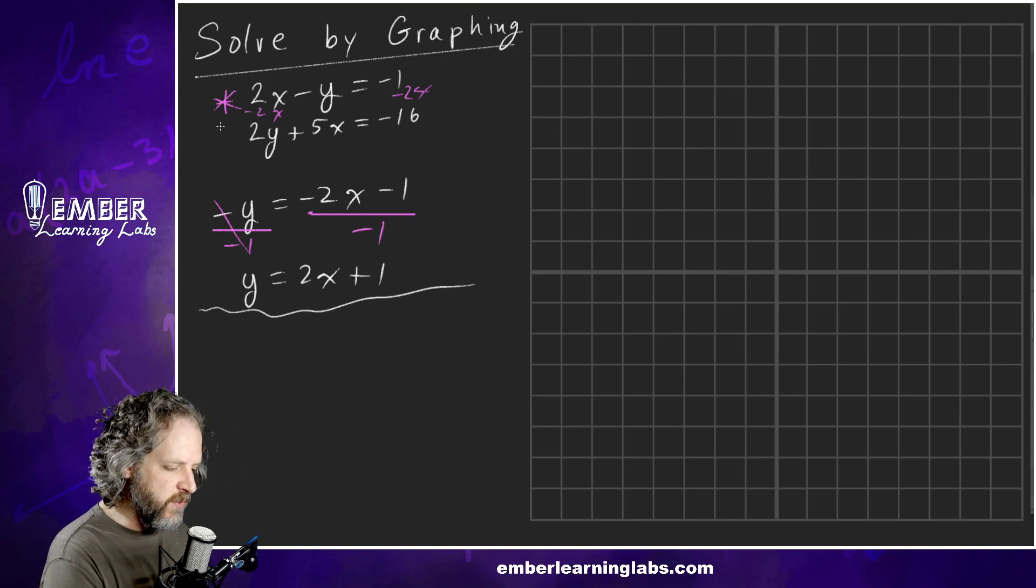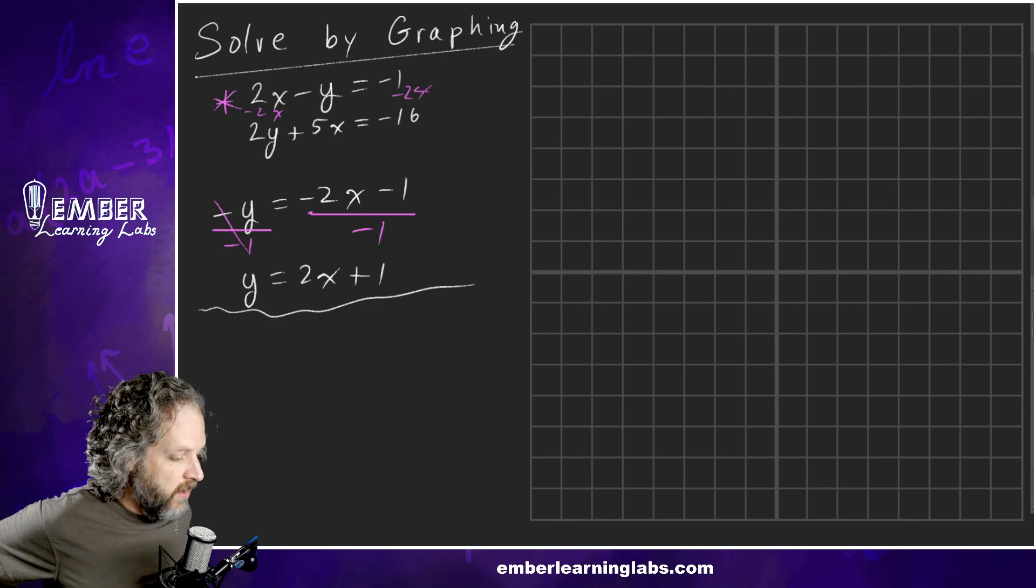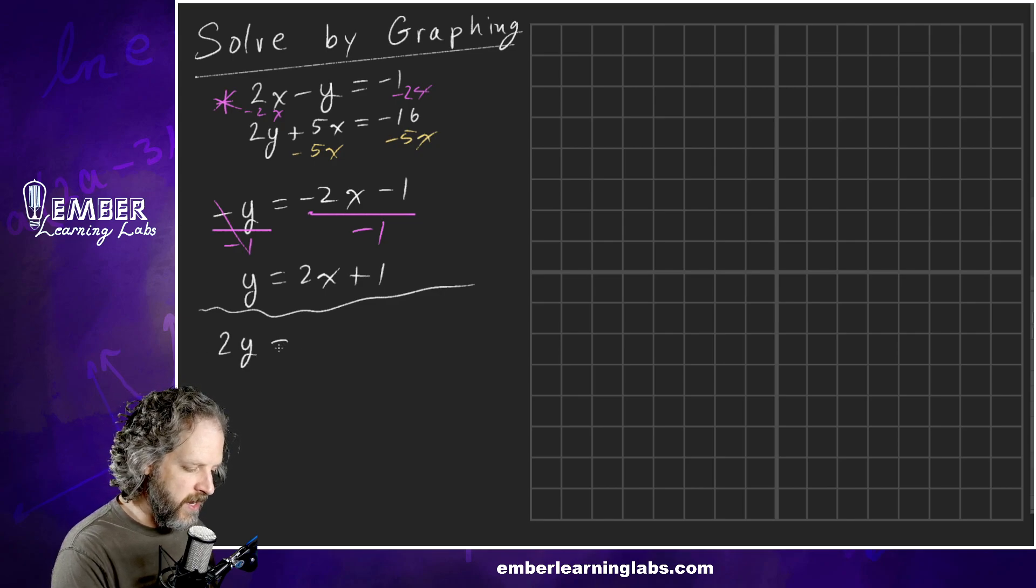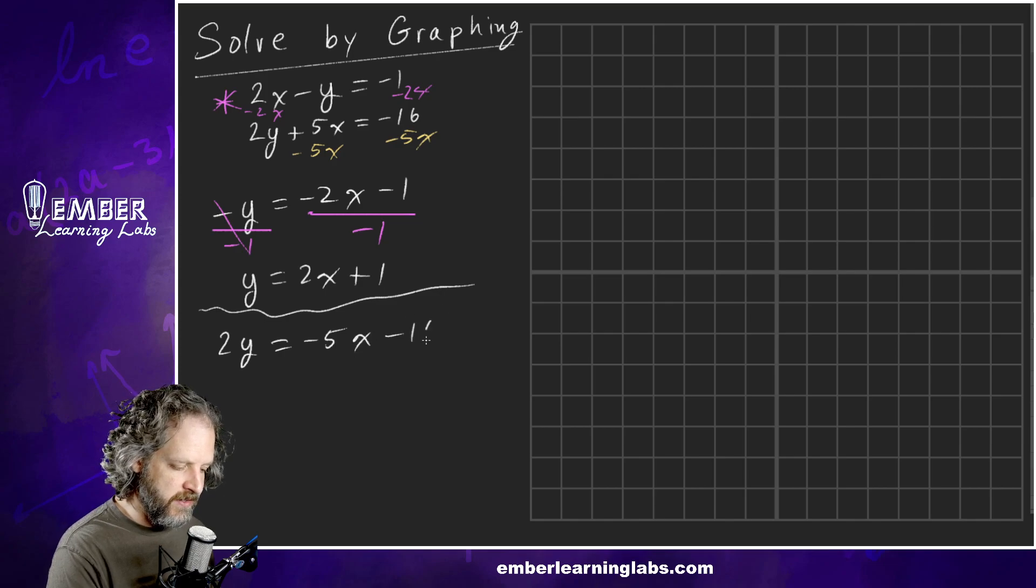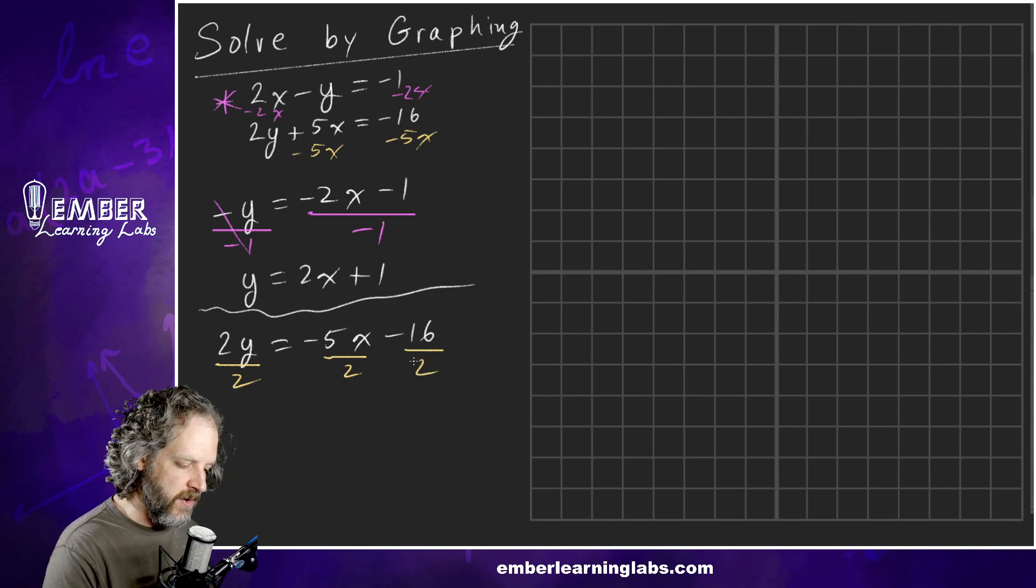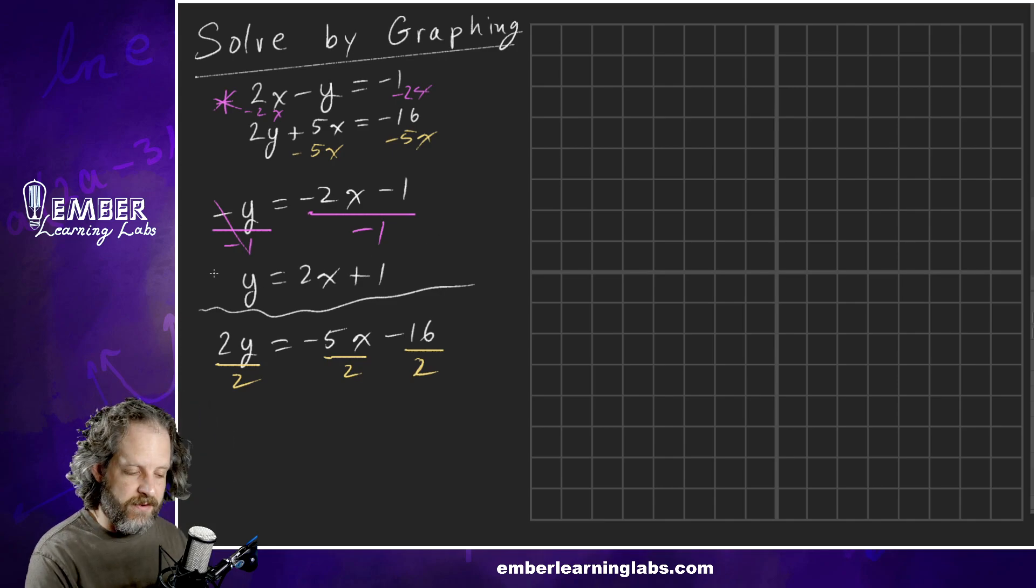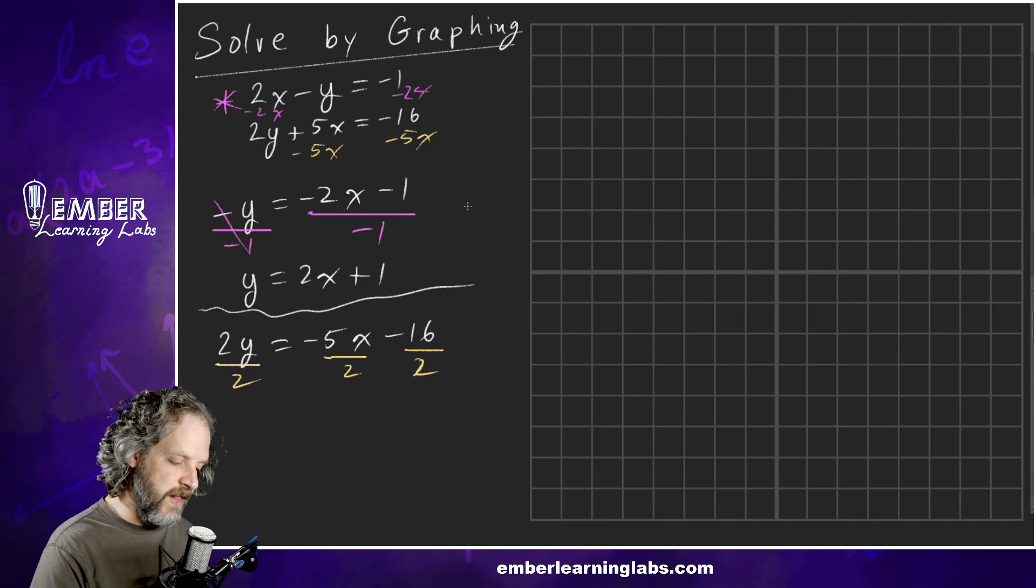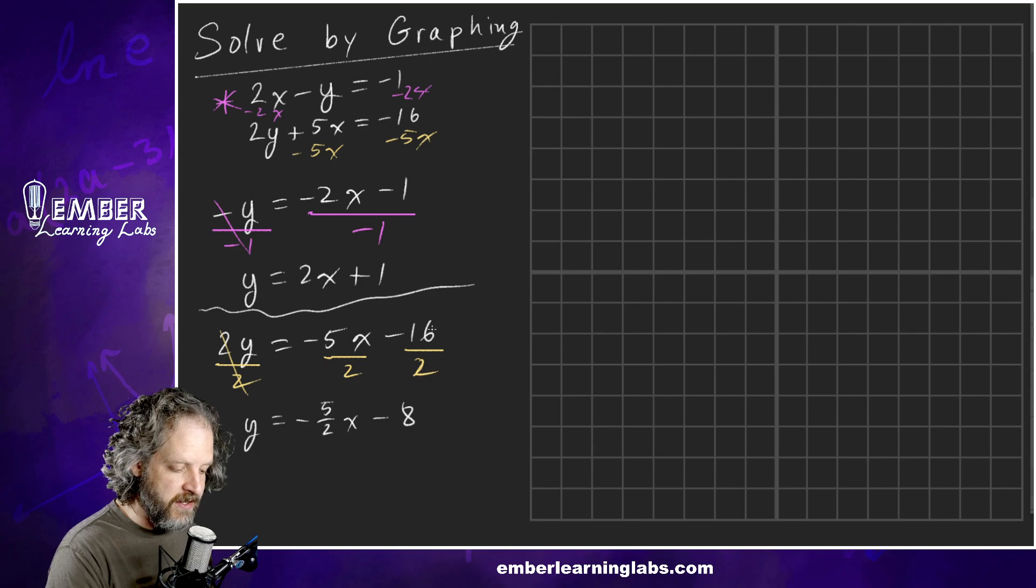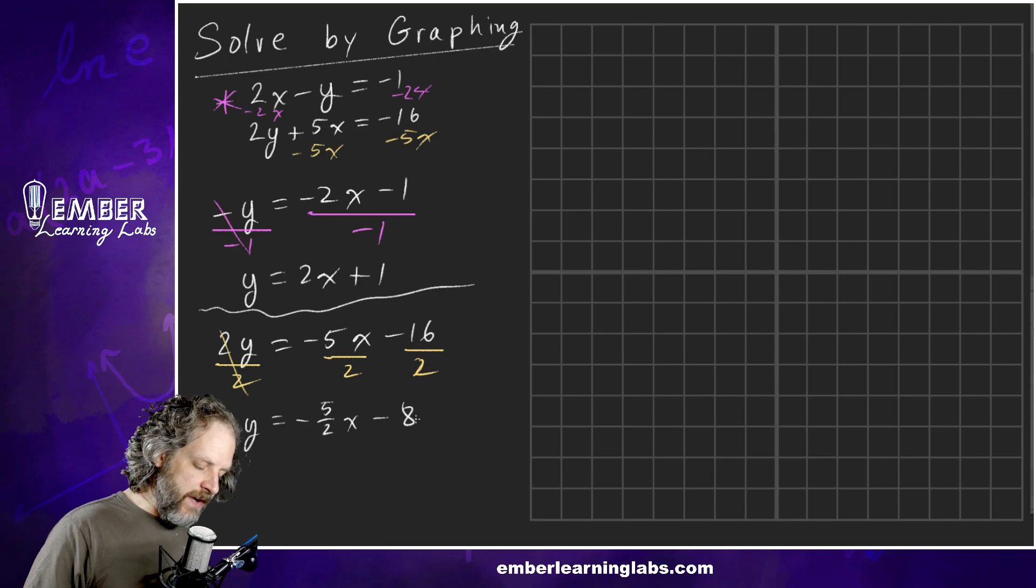We'll graph that guy here in a minute. Let's do the other one. We want to get y by itself. We've got this 5x that we've got to subtract off. Minus 5x, minus 5x. So then we're left with 2y equals negative 5x minus 16. Now we've got this 2 on here. We've got to divide everything by 2. I'm going to write that on each one just to remember what's going on. So then we get y equals negative 5 halves x minus 8, because negative 16 divided by 2 is negative 8. So now we've got these two equations.